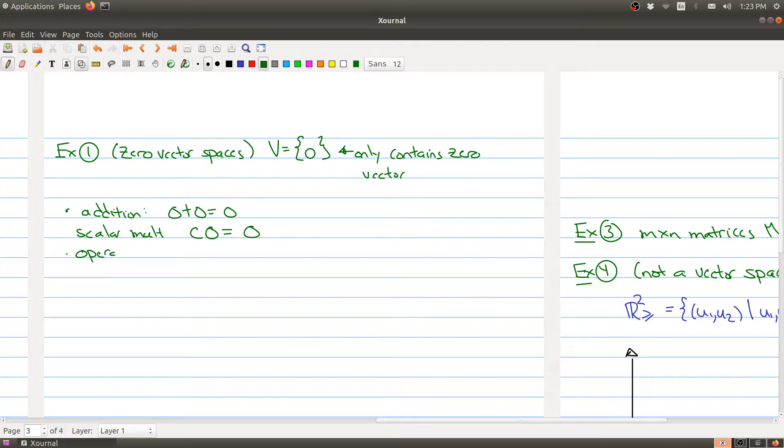So this clearly satisfies—these operations satisfy one and six, right, because when I apply the operation I get something back in my set V, and the rest of the axioms are satisfied. Rest of axioms satisfied, and this is actually easy to check.